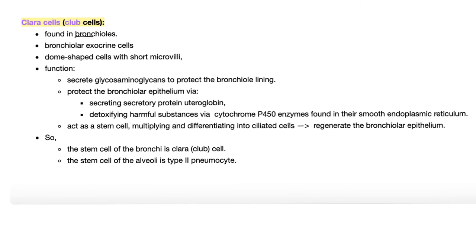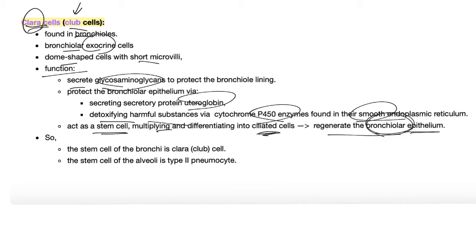Club cells or Clara cells found in the bronchioles. Bronchioles are exocrine cells. They are dome-shaped with short microvilli. Function. We love Clara. Why? Because she secretes lots of fun stuff. Glycosaminoglycans as well as uteroglobin. Detoxifies harmful substance thanks to the cytochrome P450 in the smooth endoplasmic reticulum. It also acts as a stem cell, multiplying and differentiating into ciliated cells to regenerate the bronchial epithelium. So the stem cell of the bronchi is Clara cell. The stem cell of the alveoli is the type 2 pneumocyte. This is really important to understand.